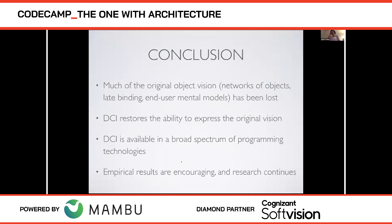In DCI you spend most of your time in one congealed scope where all the information you need is there. In conclusion — this is a very brief summary; I give a two-day course on DCI — to understand it you need to try it. You can download the Trygve programming language from GitHub. Most of the original object vision in most programming languages has been lost, and the casualty isn't so much on programmers as on end users.